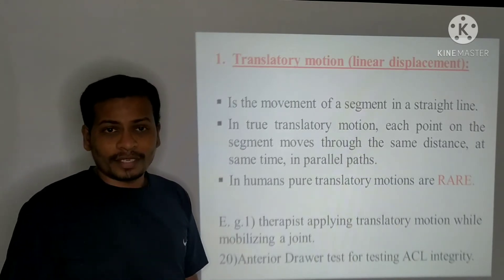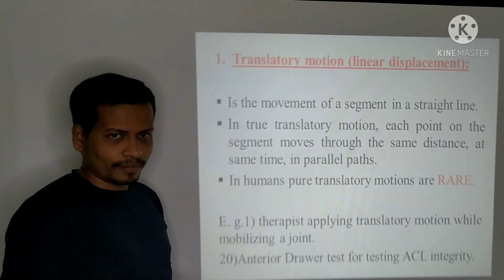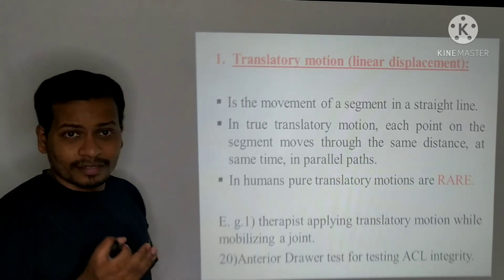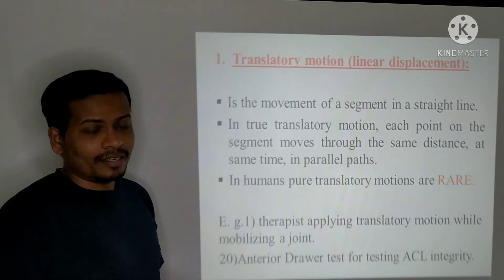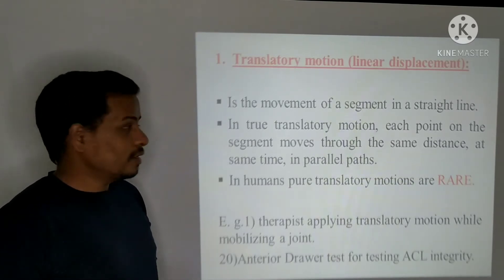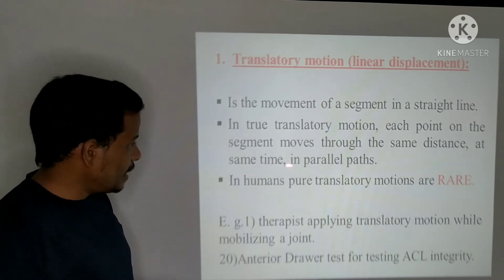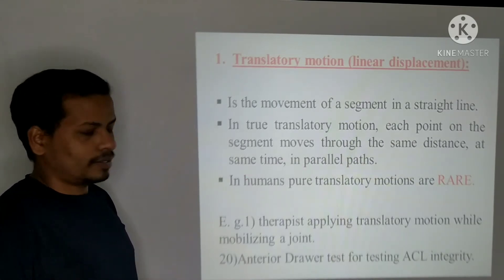What is translatory motion? Translatory motion is a movement of a segment in a straight line. Motion occurring in a straight line is known as translatory motion. In a true translatory motion, each point on the segment moves the same distance at the same time in parallel paths.